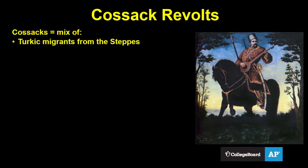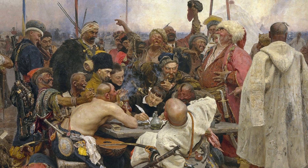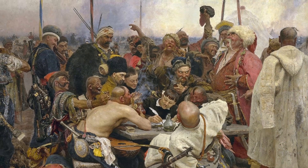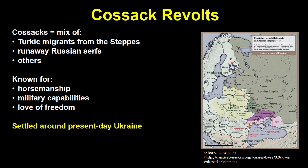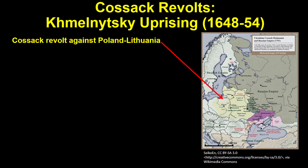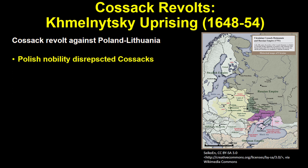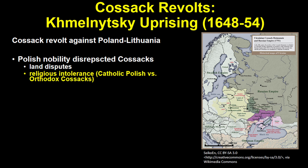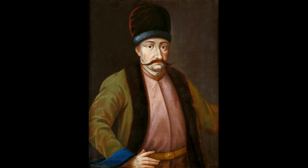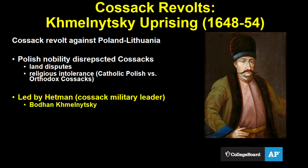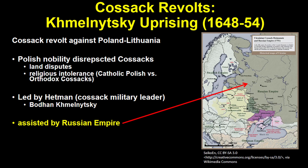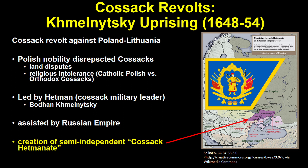Let's head east a bit and talk about the Cossacks, who were specialists at resisting authority. They were an eclectic mix of Turkic migrants from the steppes, runaway Russian serfs, and other adventurous types, known for their excellent horsemanship, military capabilities, and love of freedom. They settled in the area roughly equivalent to present-day Ukraine. The Khmelnytsky Uprising of 1648 was against the Commonwealth of Poland-Lithuania, whose nobility had been disrespecting the Cossacks through land disputes and religious intolerance — the Polish were Catholic while the Cossacks were largely Eastern Orthodox. Led by hetman Bohdan Khmelnytsky, the Cossacks inflicted serious damage on the Polish-Lithuanians with help from outside powers like Russia, eventually leading to the creation of a semi-independent state called the Cossack Hetmanate, a vassal of the Russian Empire.